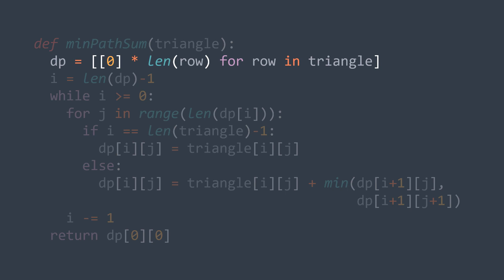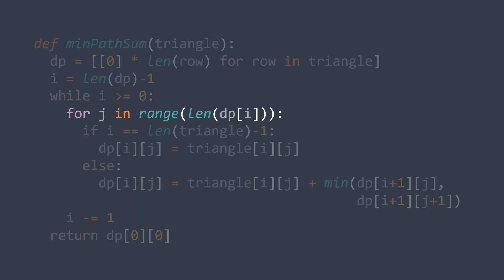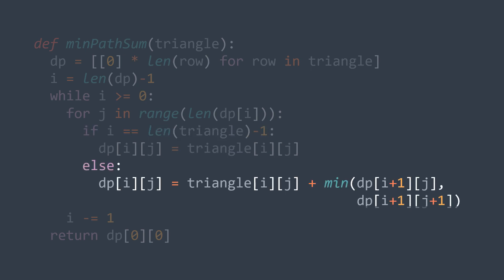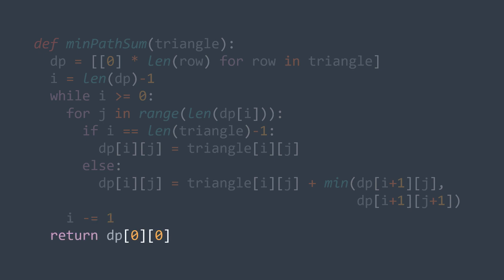For the code, the function takes a triangle and creates a 2D array dp of the same size. We fill dp starting from the last row, so the initial value of i is length of dp minus 1. We loop while i is positive since the first row is at index 0. Inside the nested loop, if we are on the last row, dp[i][g] equals triangle[i][g]; otherwise dp[i][g] equals triangle[i][g] plus the minimum between dp[i+1][g] and dp[i+1][g+1]. After filling each row we decrement i to move up. After filling dp, we return dp[0][0].